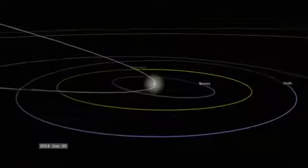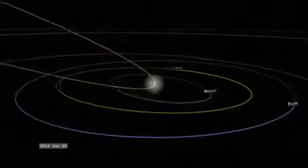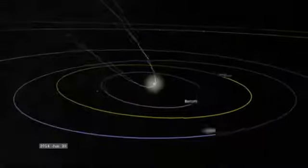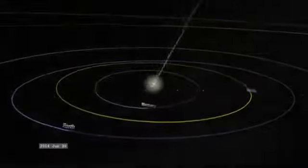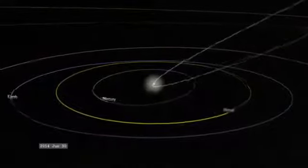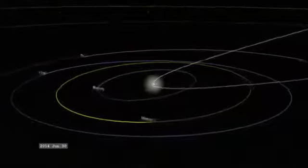Meteor showers occur when the Earth passes through the dust left behind by comets, usually by recurring short-period ones. Meteor showers from long-period Oort cloud comets are rare events indeed.